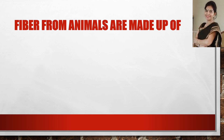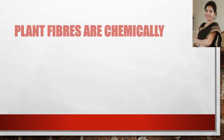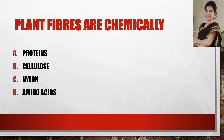Now the next question: fiber from animals are made up of — the answer is protein. Next question: plant fibers are chemically — cellulose is the correct answer.